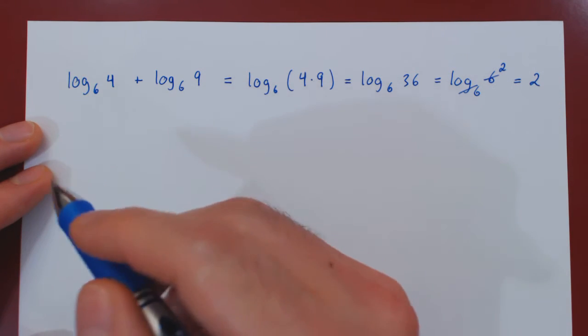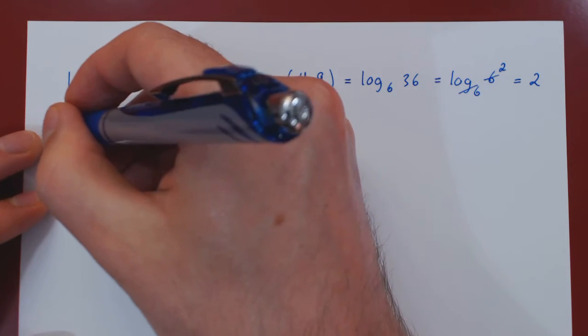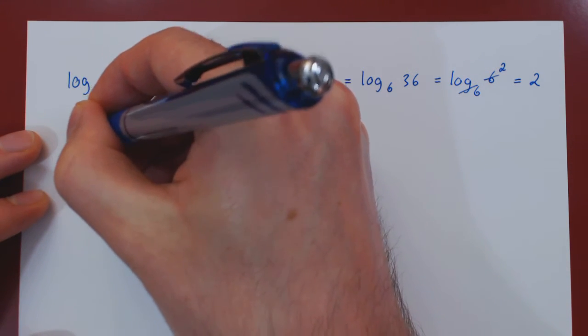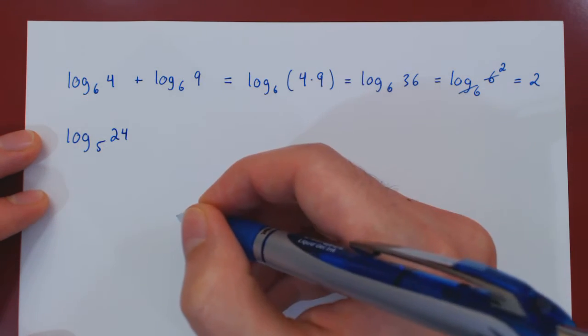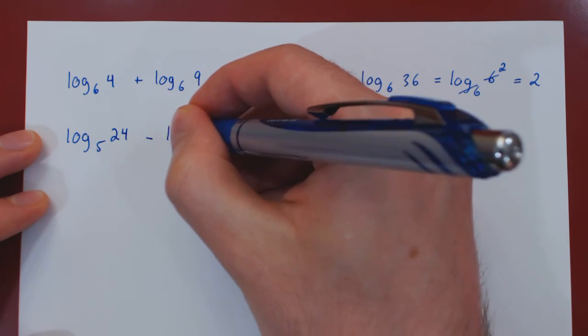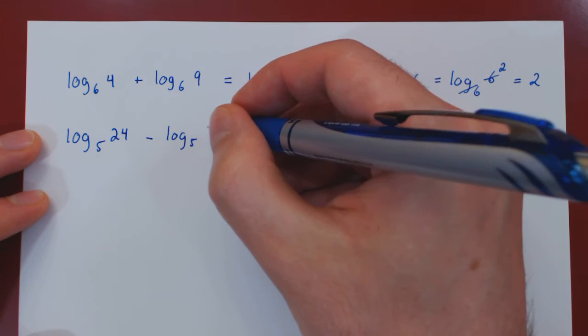Let's now look at a difference of logarithms. So what if we have the logarithm base 5 of 24 minus the logarithm base 5 of 3?